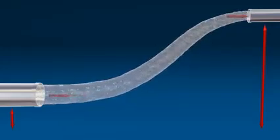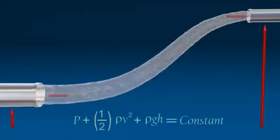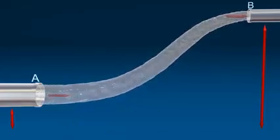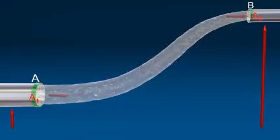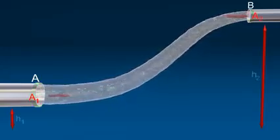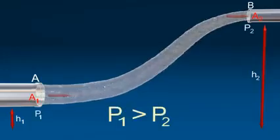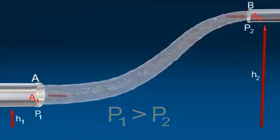Bernoulli's equation applies conservation of energy. Consider a tube AB of varying cross-section A1 and A2 and at different heights H1 and H2. Liquid is flowing from A to B.